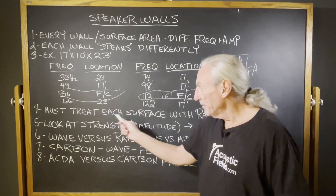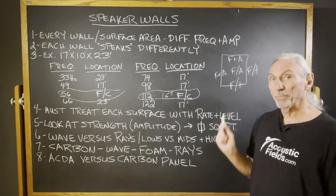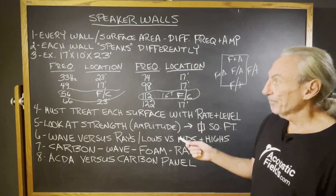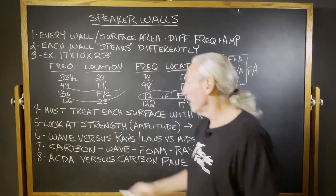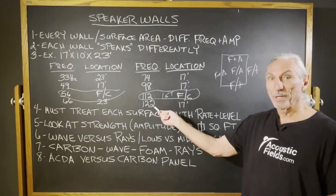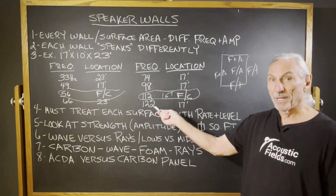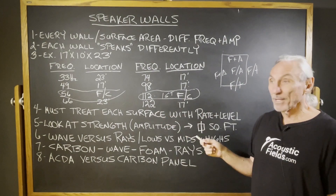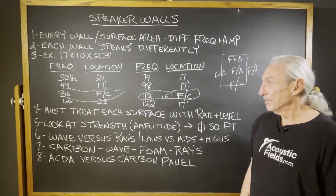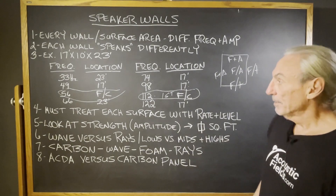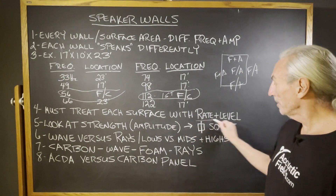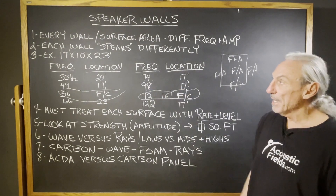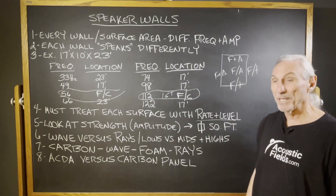We must treat each surface area with the proper rate and level of absorption. A 33 hertz problem is way different than a 122 hertz problem — different treatment, different amount of coverage, different costs. We must treat each surface area with the proper rate and level of absorption to correspond to the frequency, amplitude, and location of the issues.